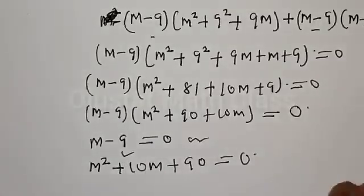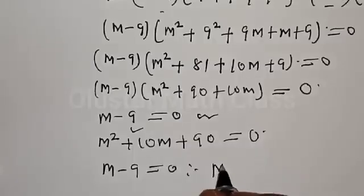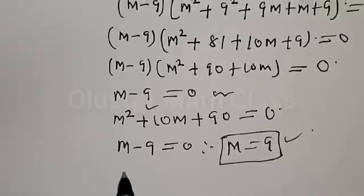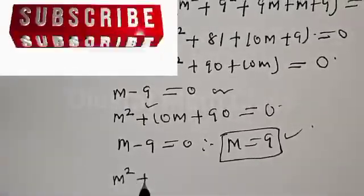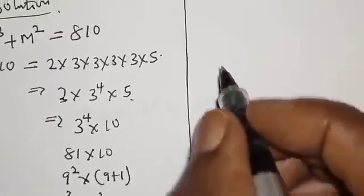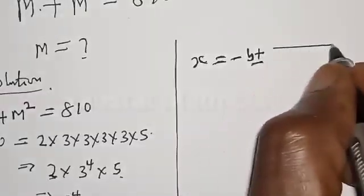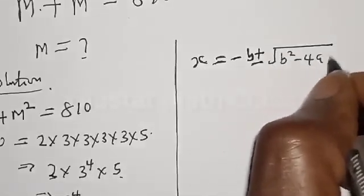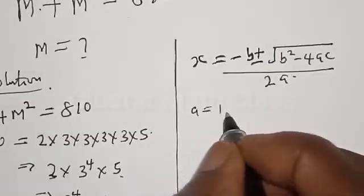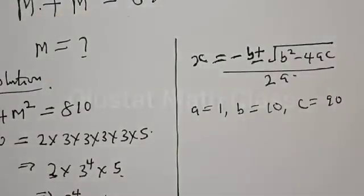From here, M minus 9 equals 0, therefore M equals 9 for the first case. For the second case, we have M² plus 10M plus 90 equals 0. This is a quadratic equation; let's use the quadratic formula. We know that x equals minus b plus or minus square root of b² minus 4ac over 2a. From the quadratic equation, a equals 1, b equals 10, and c equals 90.